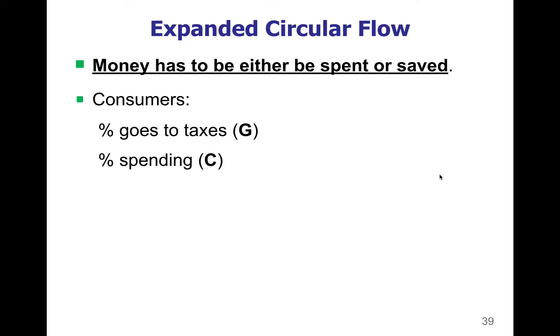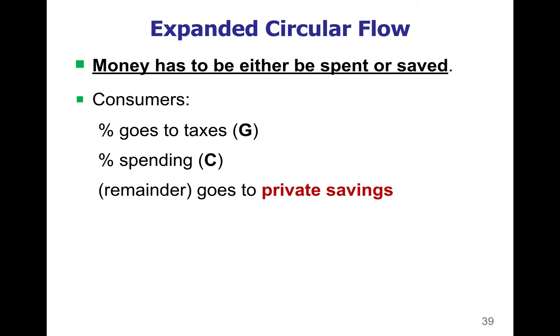All money has to be either spent or saved. If you earn a certain amount of money, a certain percentage has to go to pay your taxes — that is the government, or G portion of gross domestic product. Then consumers can go out and buy goods and services that they want — that is the consumption portion. And if you have any money left over, that can go into private savings. A very typical way is through a savings account at a bank, which does not earn you a whole lot of interest, but it's very easy to get money out — you can go to an ATM or tie your debit card to your savings account.